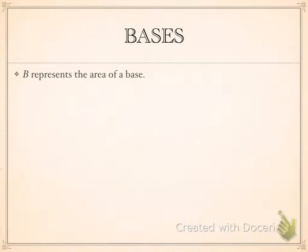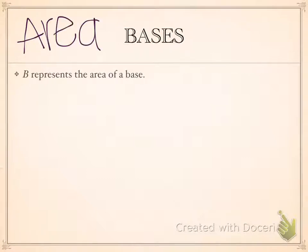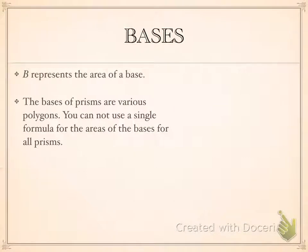Something important I want to point out is about bases. For the area of the base, the capital letter B represents the area of the base in a formula. Depending on the shape of your prism, your base can be a different shape, so you might have to use all kinds of different formulas to find that area. The bases are various polygons — you can't use just a single formula.